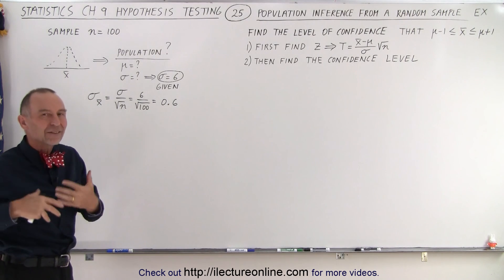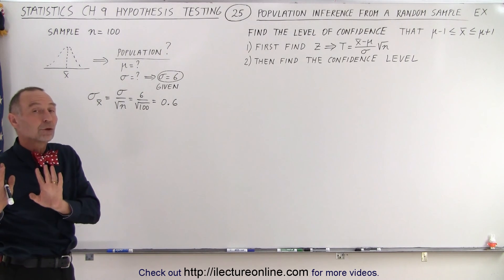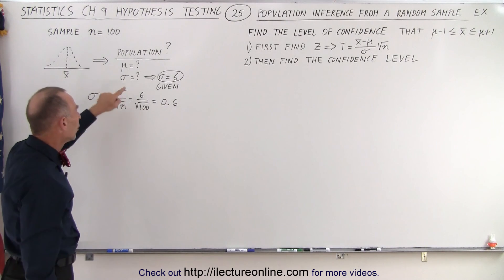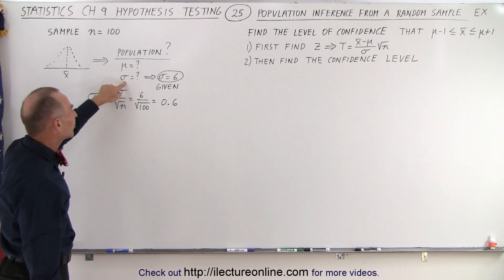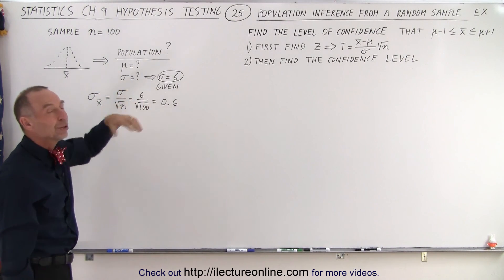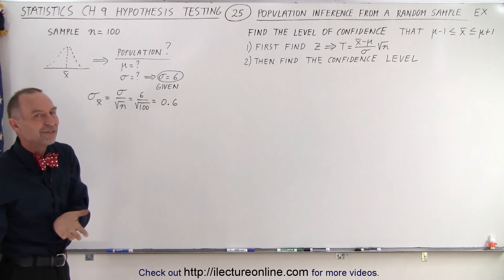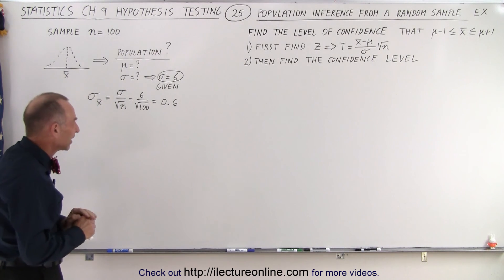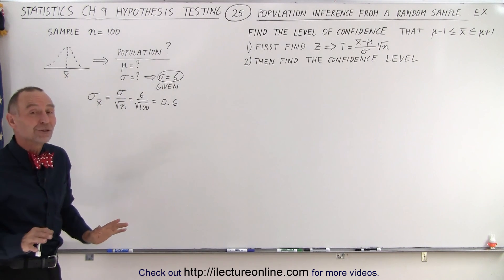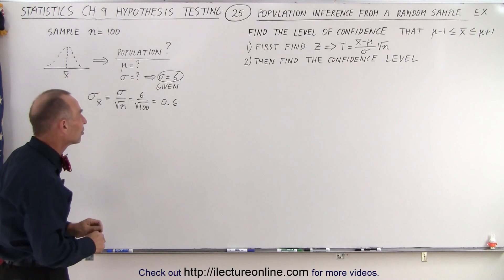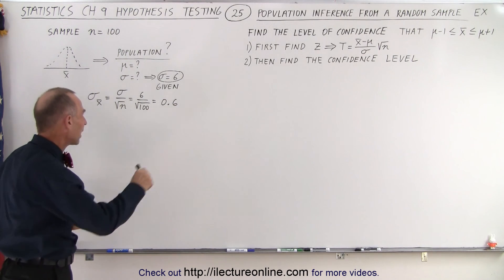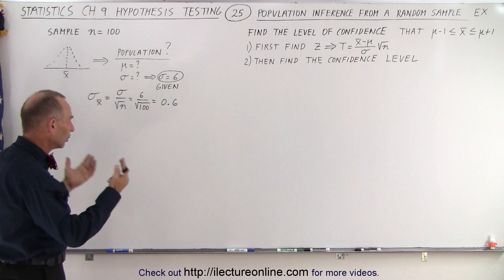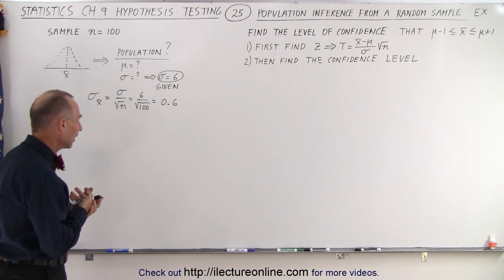That's an extra added step we're going to learn in the next series of videos on the next chapter. What we're going to do instead here is assume that we know the standard deviation of the population. It's kind of a little bit of cheating so to speak, to make it a little bit easier. We'll worry about how to do that later when we do the whole estimate.